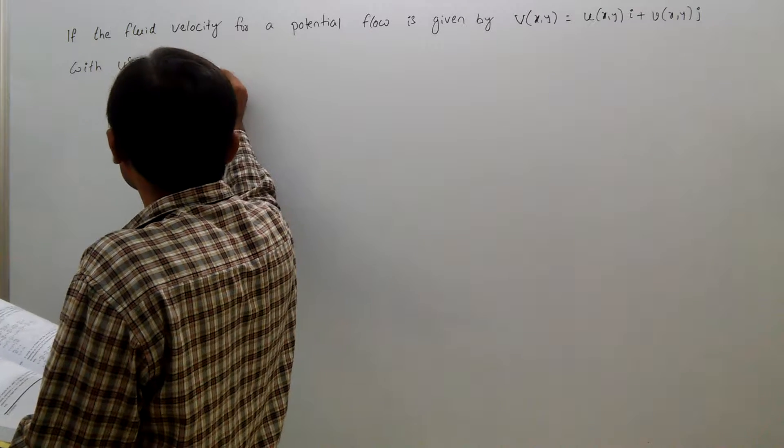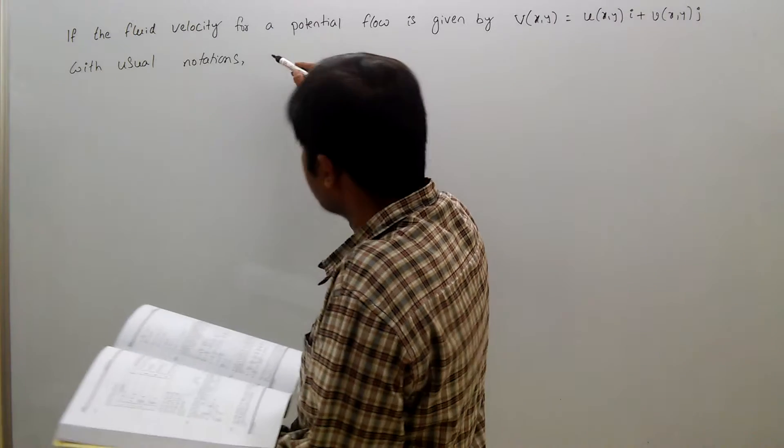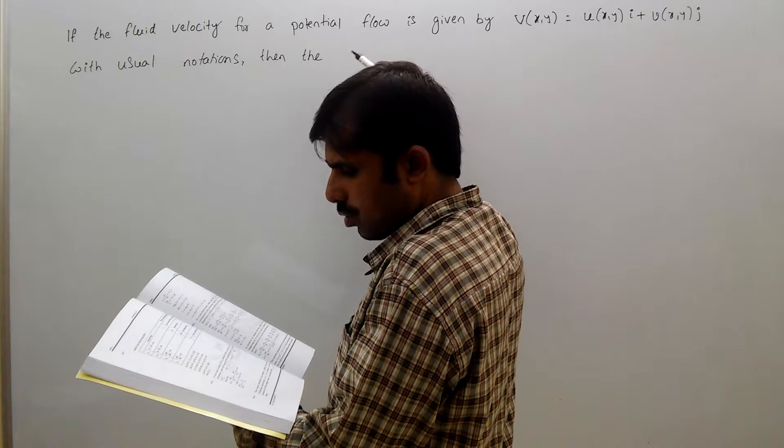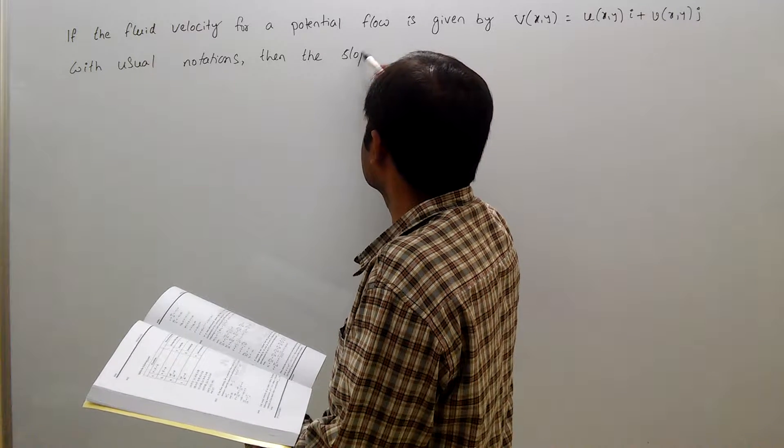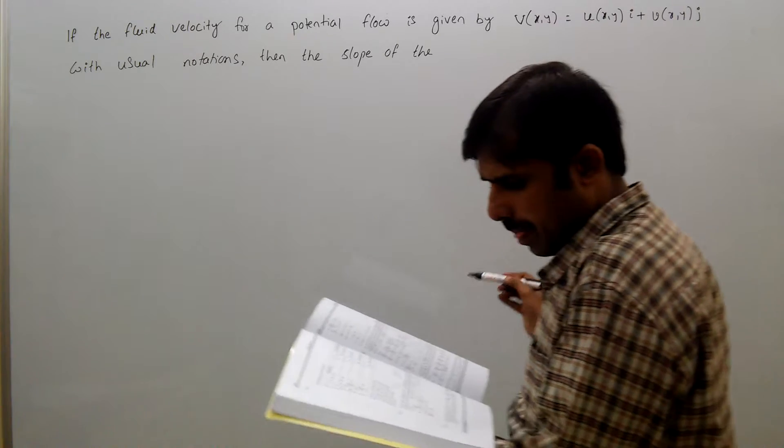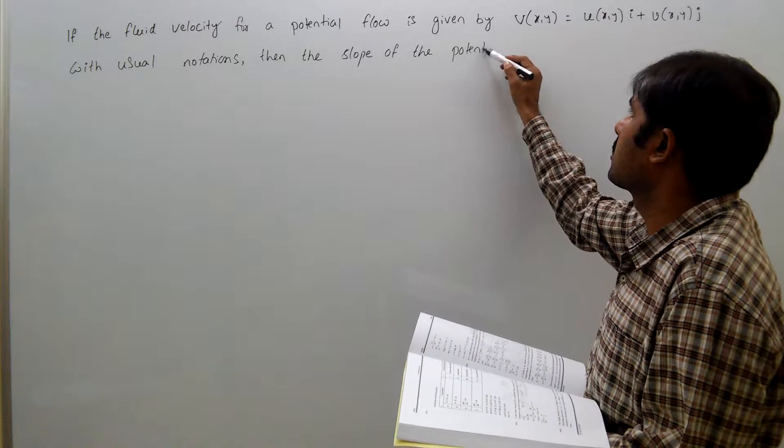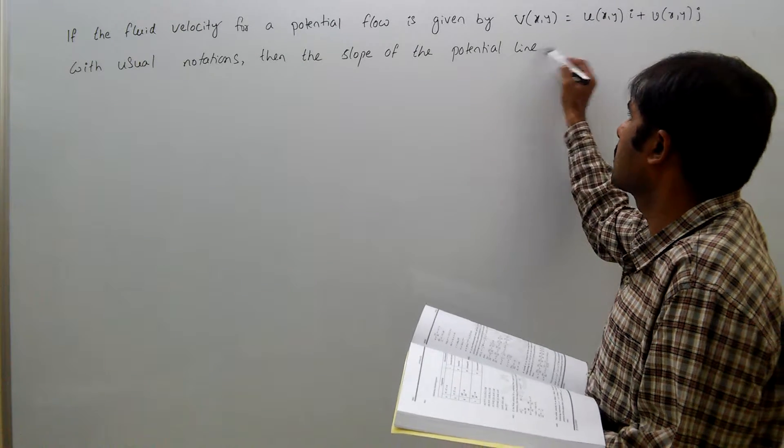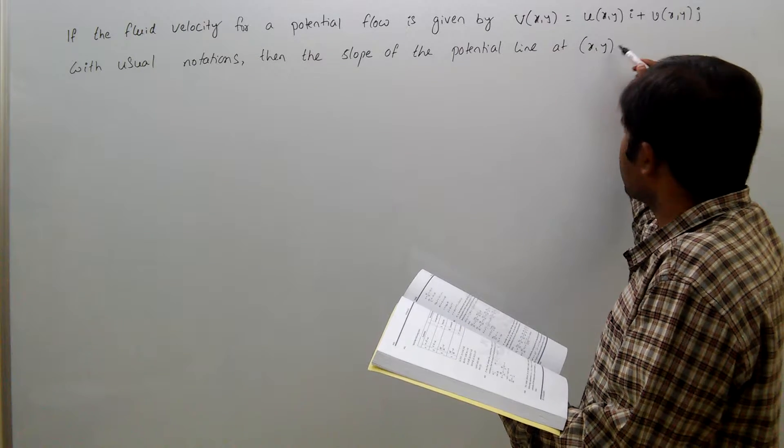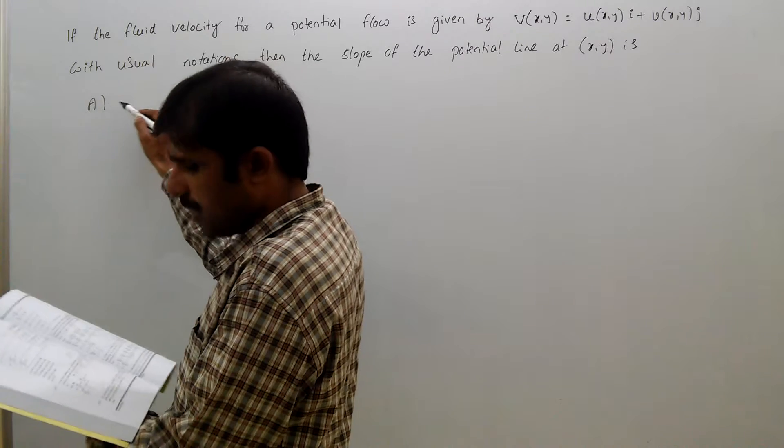with usual notations, then the slope of the potential line at (x,y) is: option a